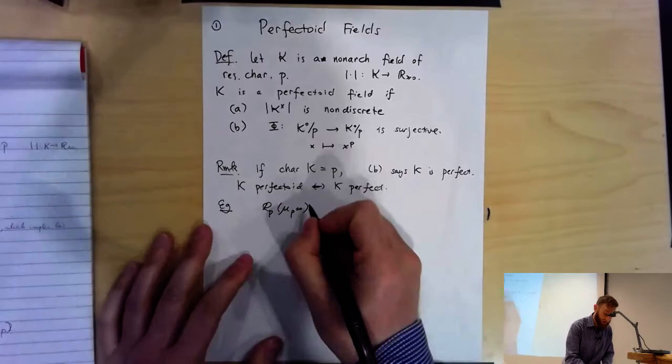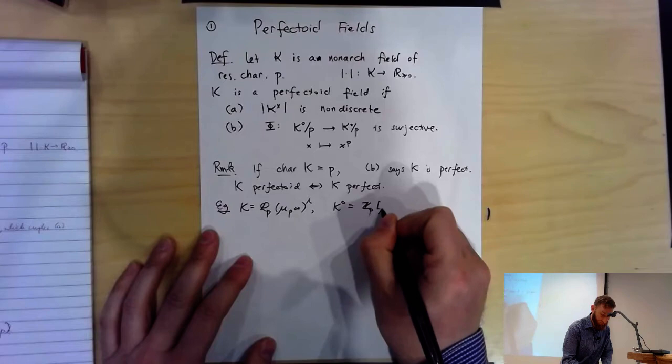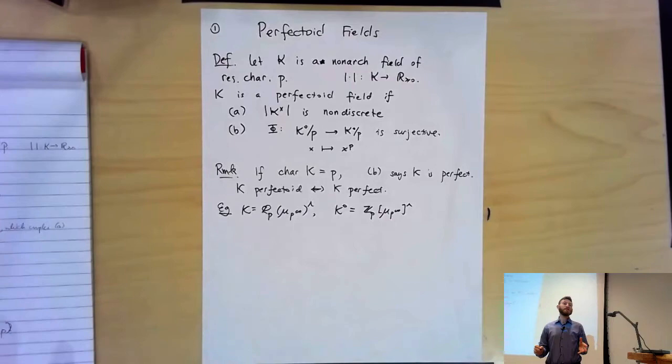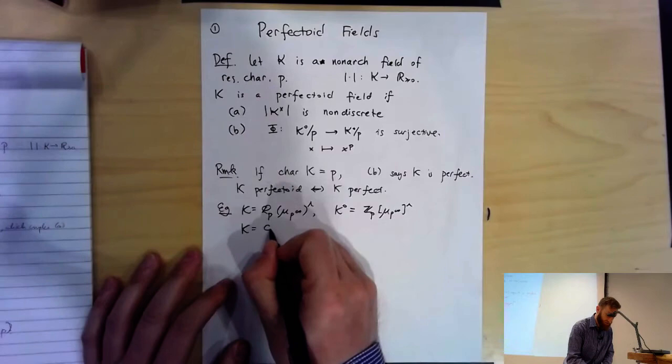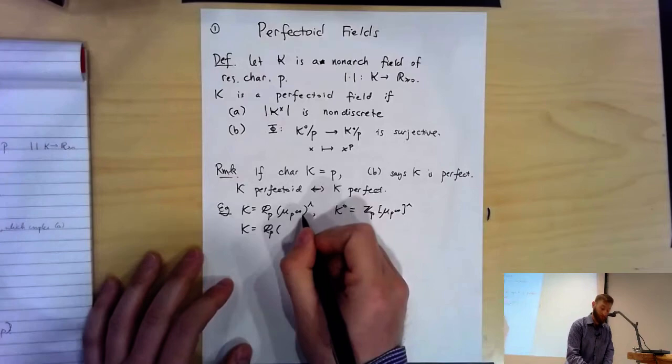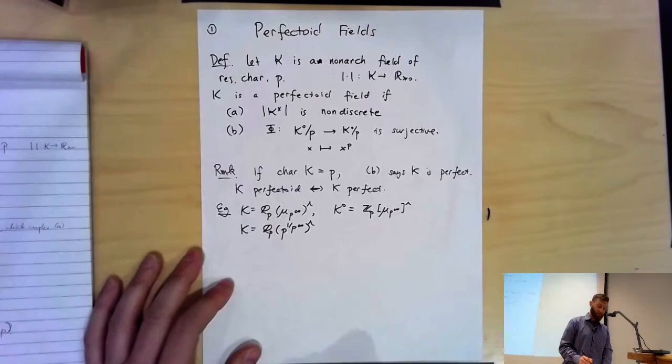If you take the ring of integers in this completion, then modulo P you'll see very clearly that you can extract P-th roots, because all P-power roots of unity themselves have P-th roots. Another example: we took P-power roots of 1, but we can also take P-power roots of P. That's an algebraic extension of Q_P, which we then p-adically complete.